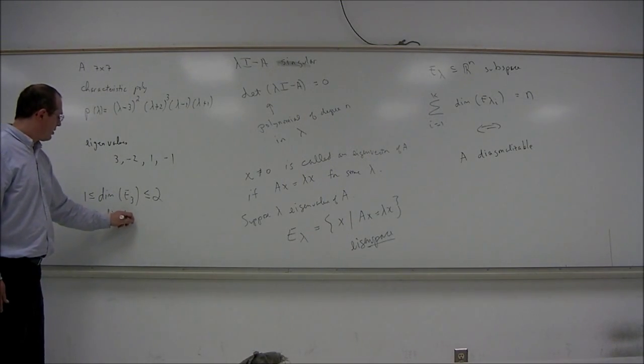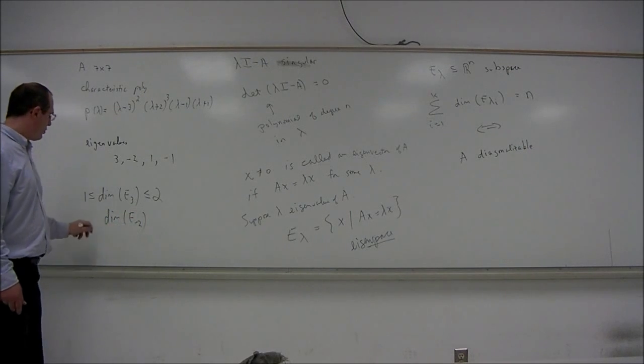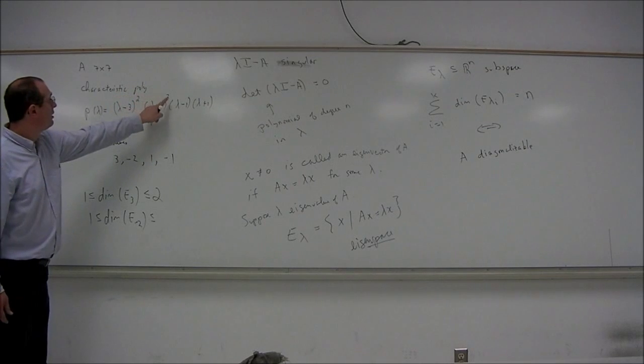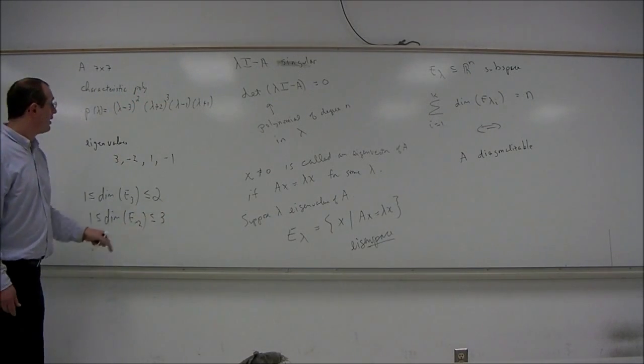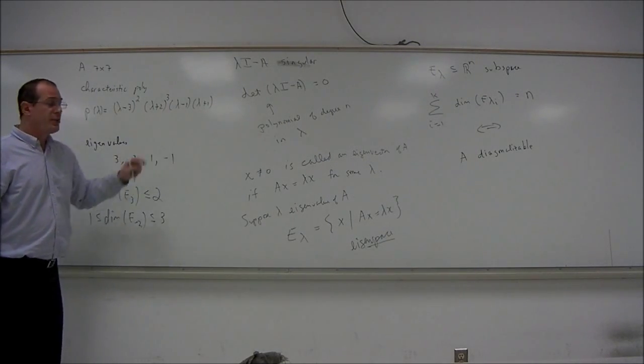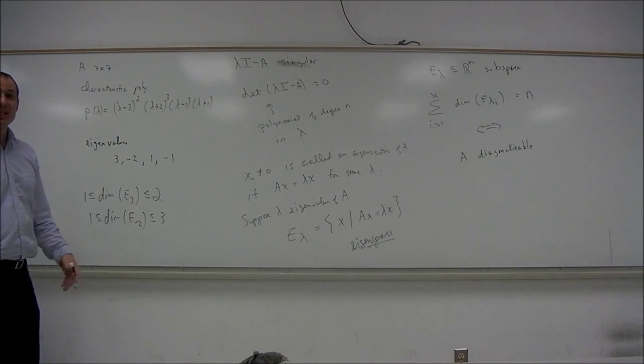So, for the others, the dimension of e sub-negative 2 is at least 1, and it's no more than 3. And for the other two, the multiplicity is 1, and so the dimension of those eigenspaces must equal 1.